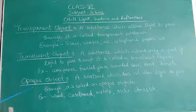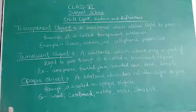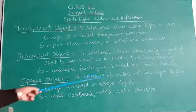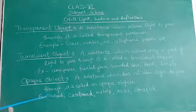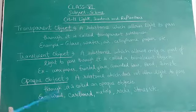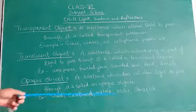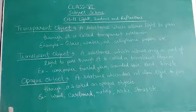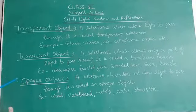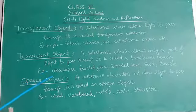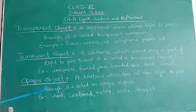Next point is opaque objects. Opaque objects are those objects from which we cannot see anything, or the substance which does not allow light to pass through it is called an opaque object. Examples of opaque objects are wood, cardboard, metals, rocks, stones, etc. These substances are known as opaque objects.